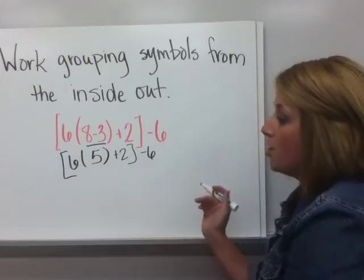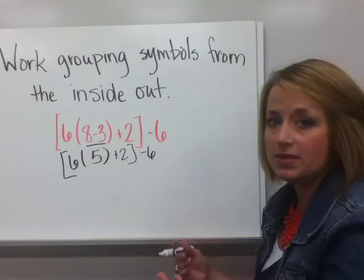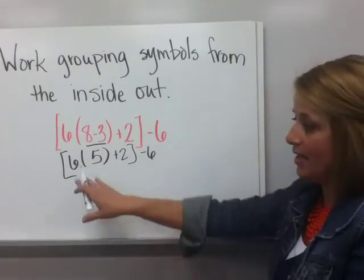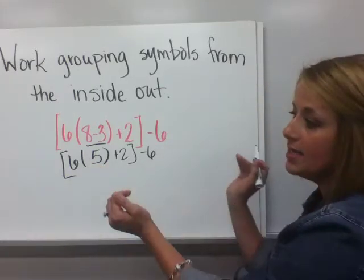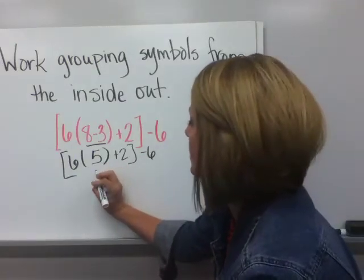So within that grouping symbol, order of operations, I'm going to multiply first. Yes, I do realize that's a parenthesis there, but that parenthesis is serving a different purpose now. It's to show multiplication and not isolating some different operations. So six times five is 30.